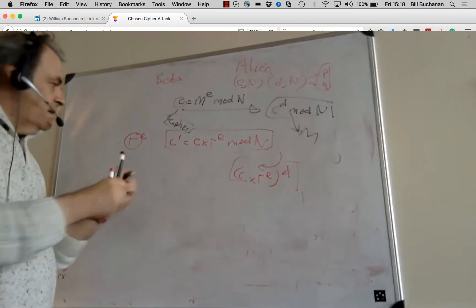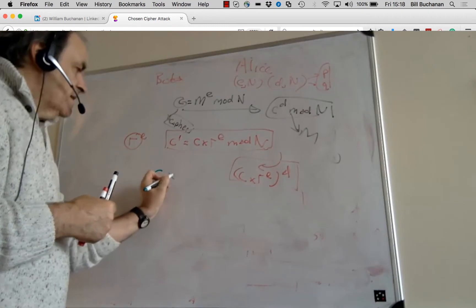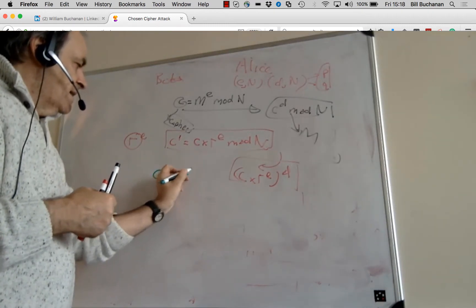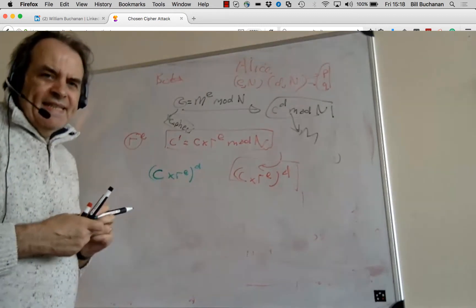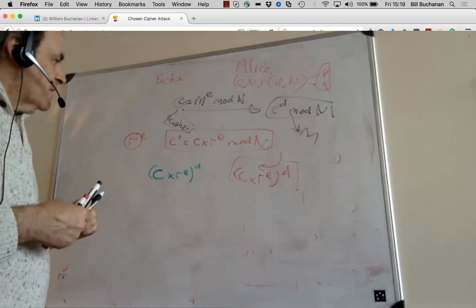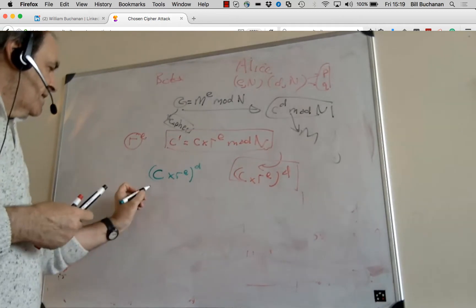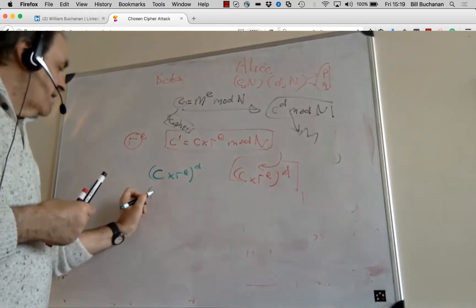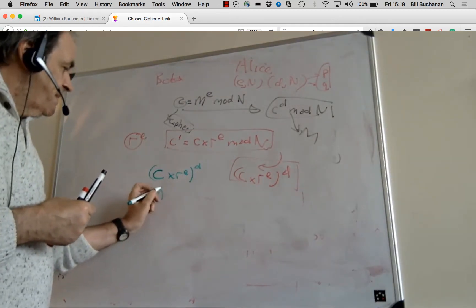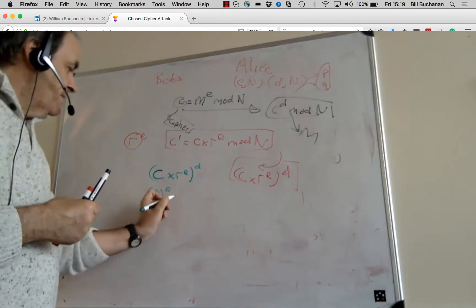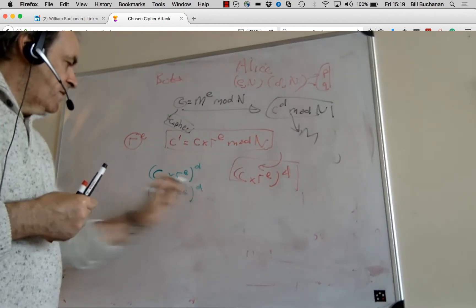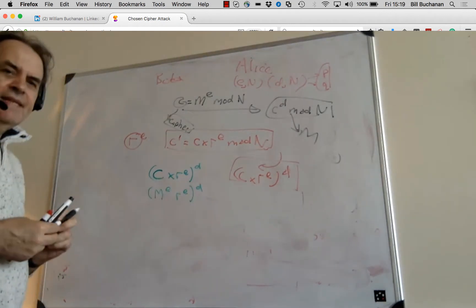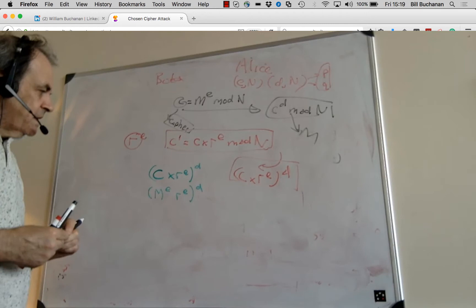So now Bob has this value here. Bob has C times R to the power of D. And then from here we can say that that is M to the power of E times R to the power of E to the power of D.